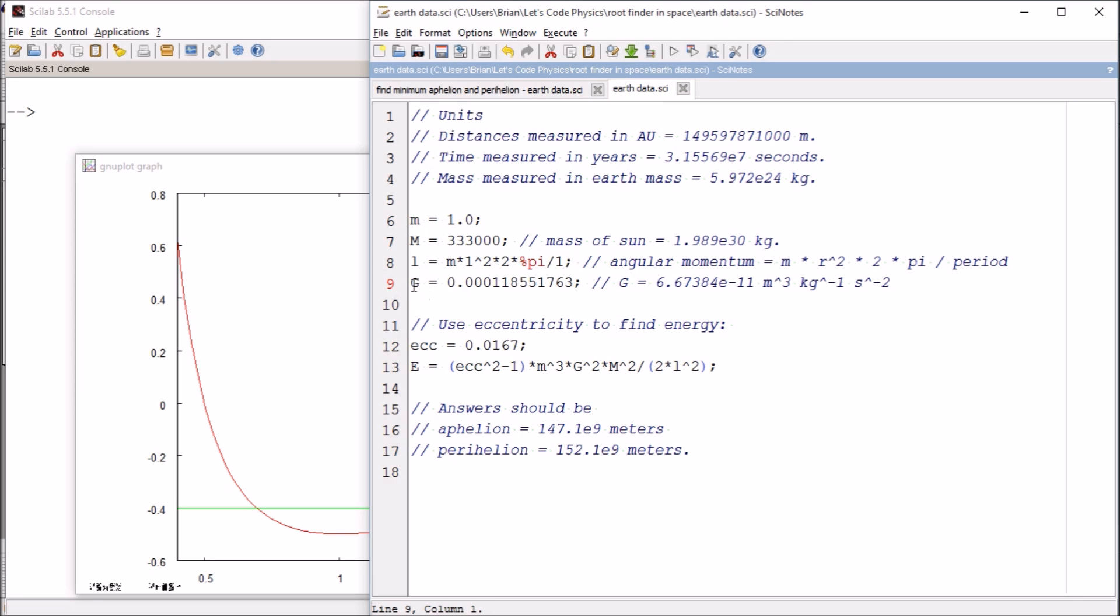And then G, the universal gravitation constant, works out to this number in units of Earth masses, AUs, and years. This is the more familiar 6.67 times 10 to the minus 11 in standard SI units.